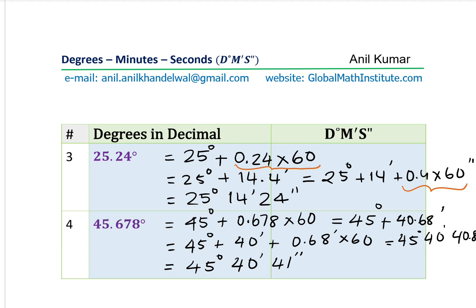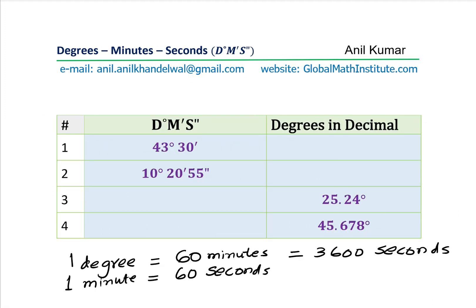With that we come to the end of this video. You have learned how to convert the units of angles when given in degrees, minutes and seconds to the decimal equivalent of degrees, and the reverse. Thanks for your time and all the best.